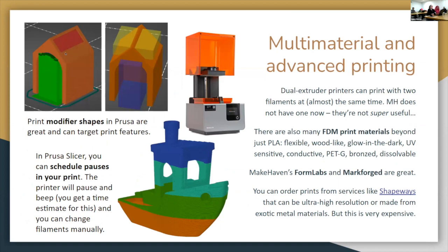Another thing you can do is add modifiers to your print. There's a support modifier and a print modifier — these are interesting ways to make your prints more complex. You can also schedule pauses — you can have as many as you want as you go up through the print, changing the filament color each time if you want.